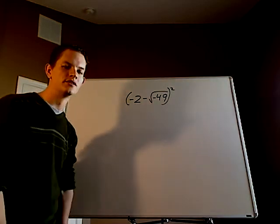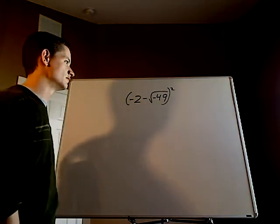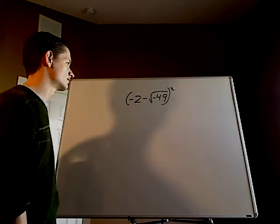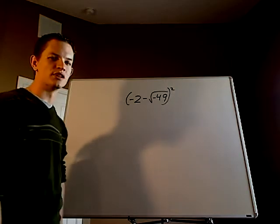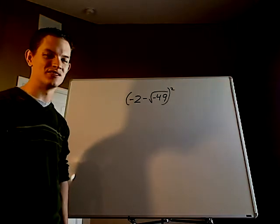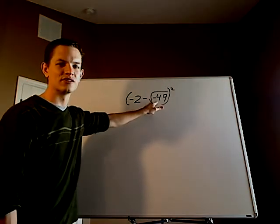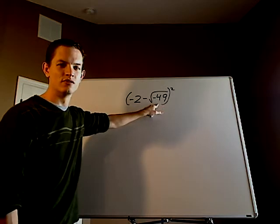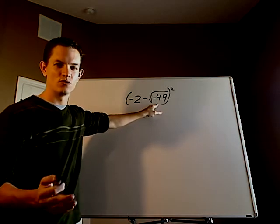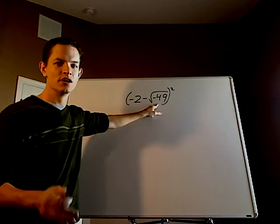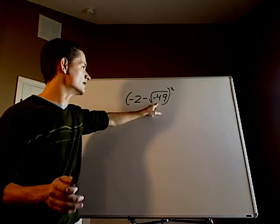Alright, let's do this problem. This problem involves complex numbers because you have a negative underneath the square root. So that indicates that somewhere, someway, somehow in that problem there's going to be an i.